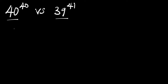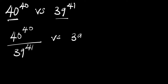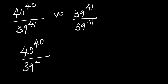What we are going to do is divide one number by the other. So we are going to have 40 power 40 divided by 39 power 41. This will give us a ratio, and if the numerator is smaller than the denominator that means we will have a number less than 1. If the numerator is bigger than the denominator, that means we will have a number greater than 1. That is how we are going to go about comparing.